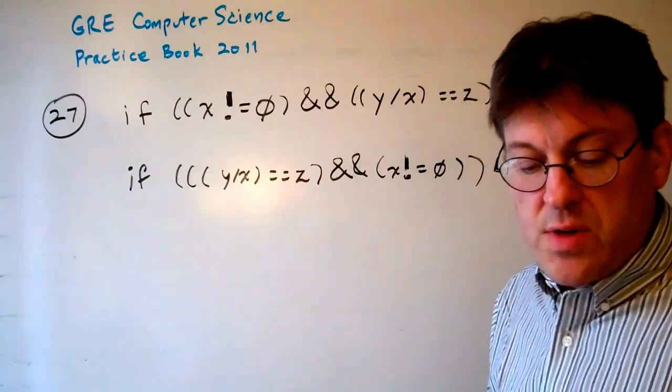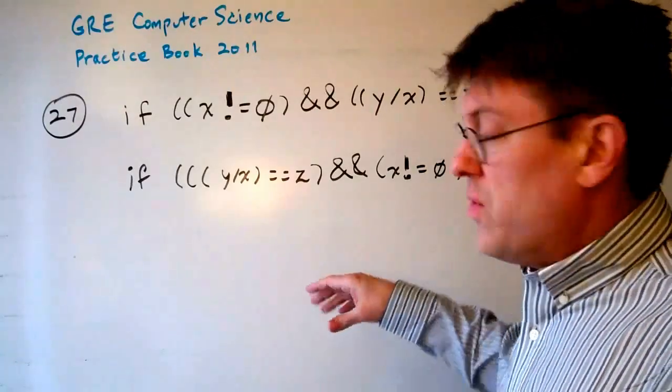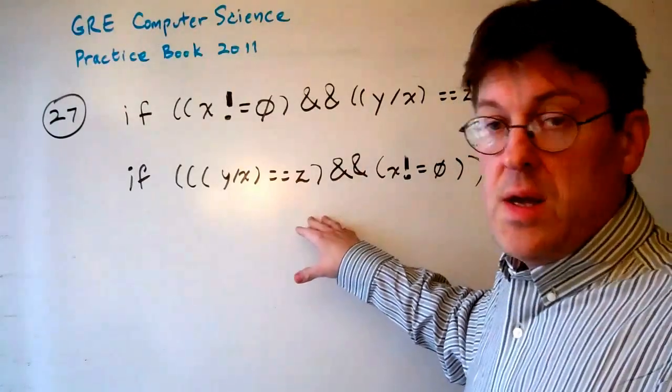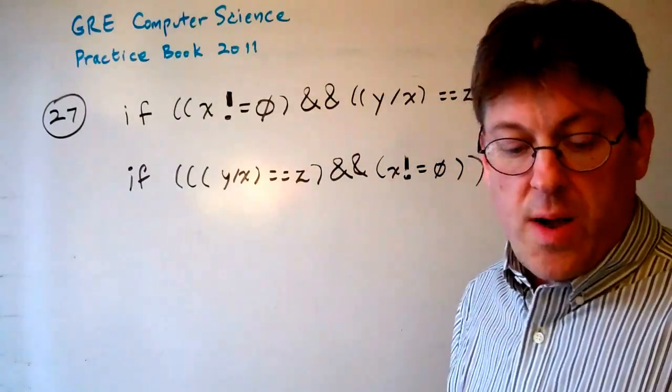So it asks which of the following is true. A, that for all x, y, and z, these two code fragments behave the same way.